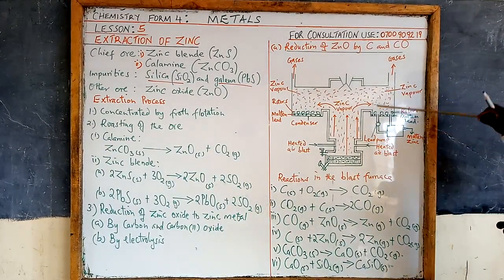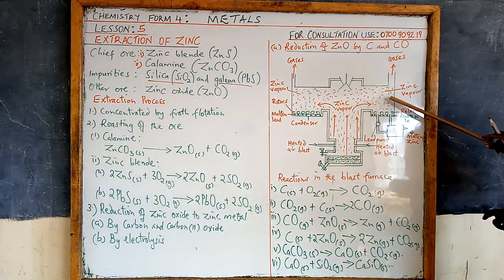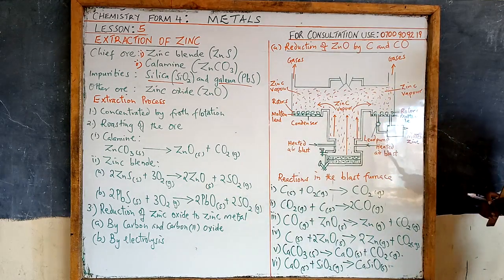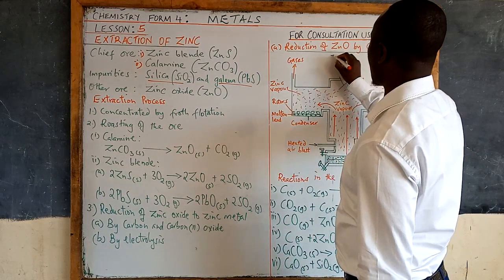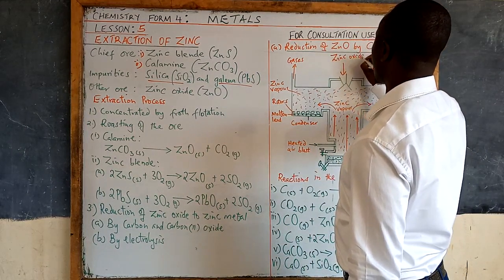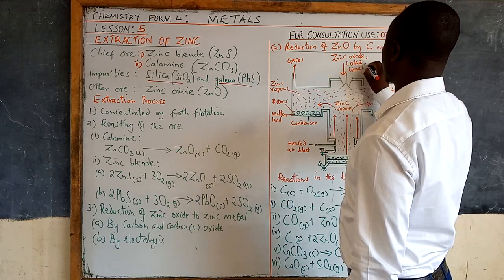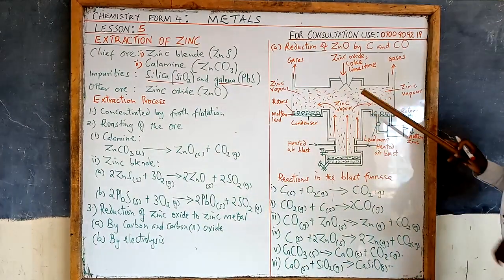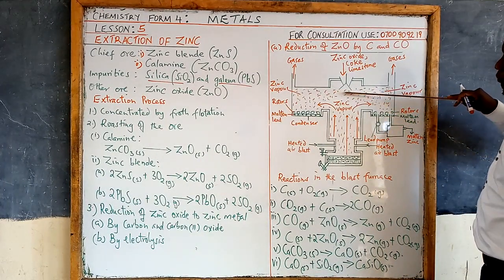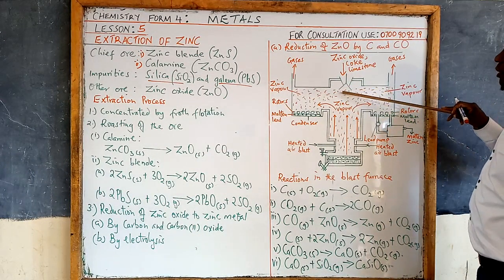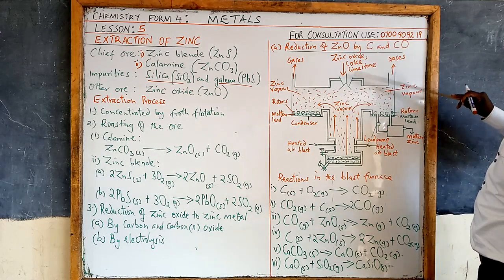You need a blast furnace — which has this shape — a modified blast furnace incorporated with a condenser. The materials added from the top are zinc oxide, coke, and limestone. The entrance is designed so that when materials are poured in, they flow in but then the entrance closes to prevent vapor from escaping.